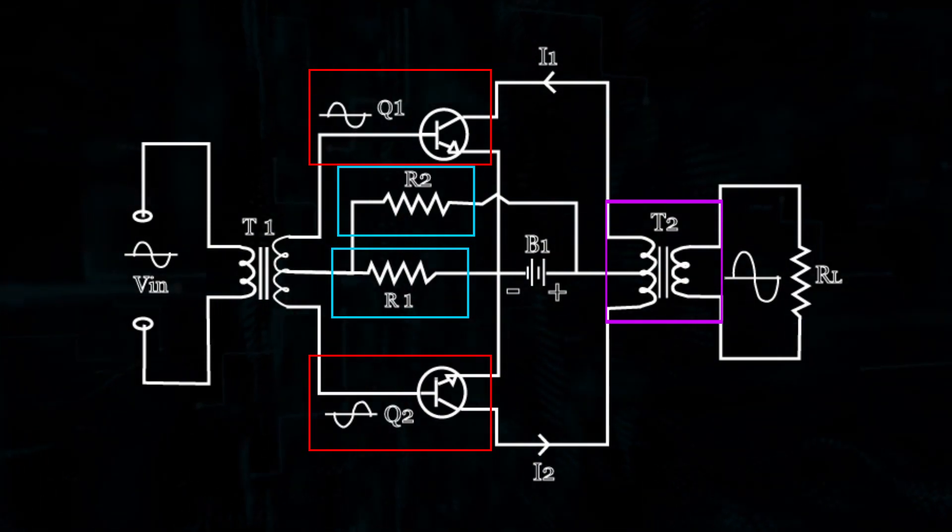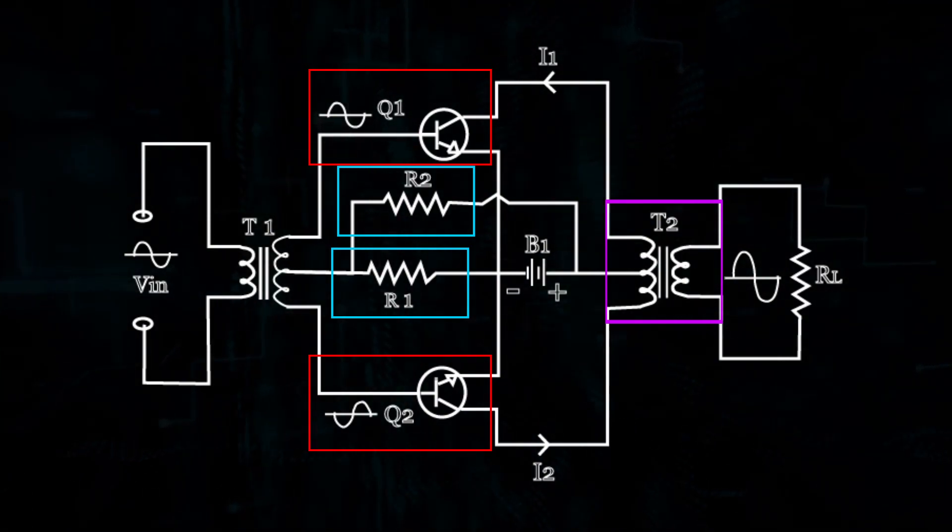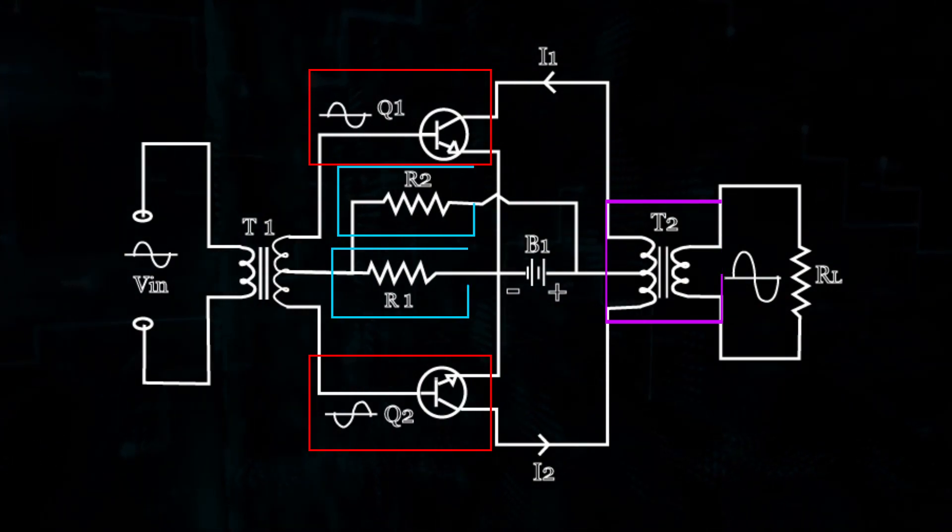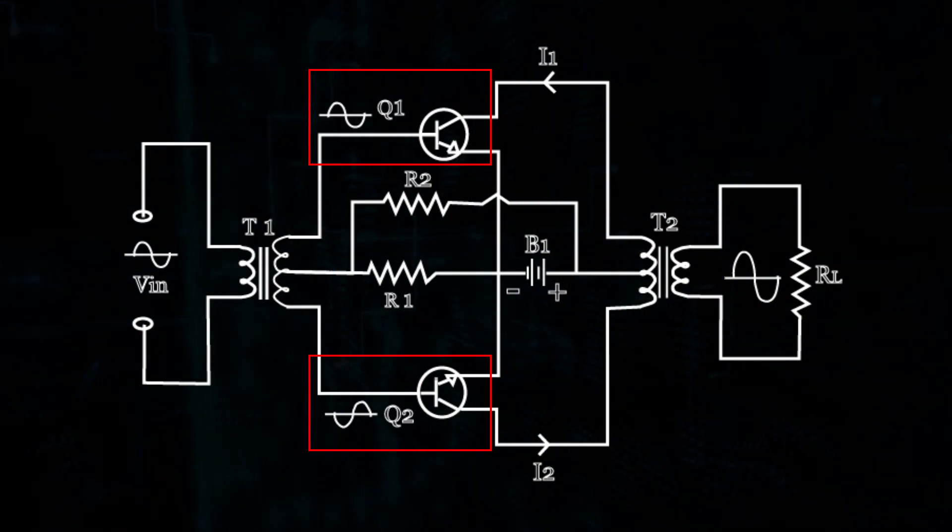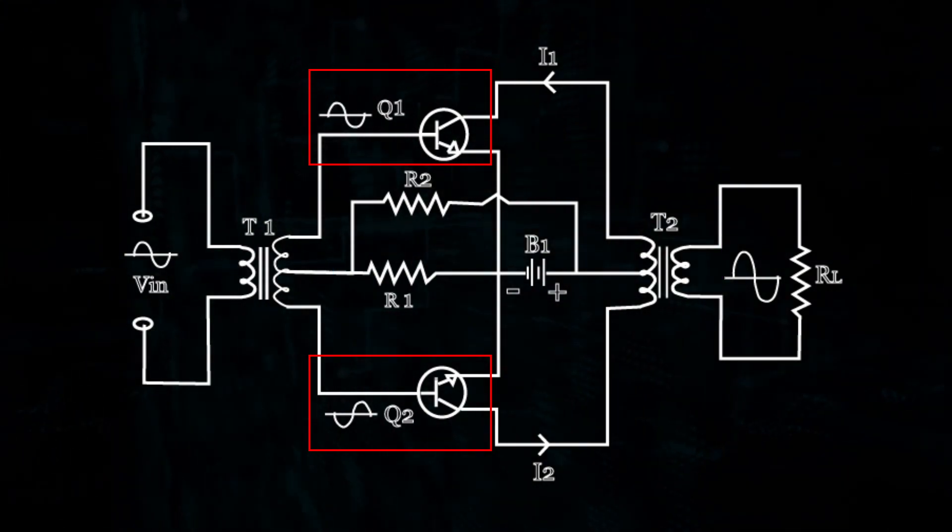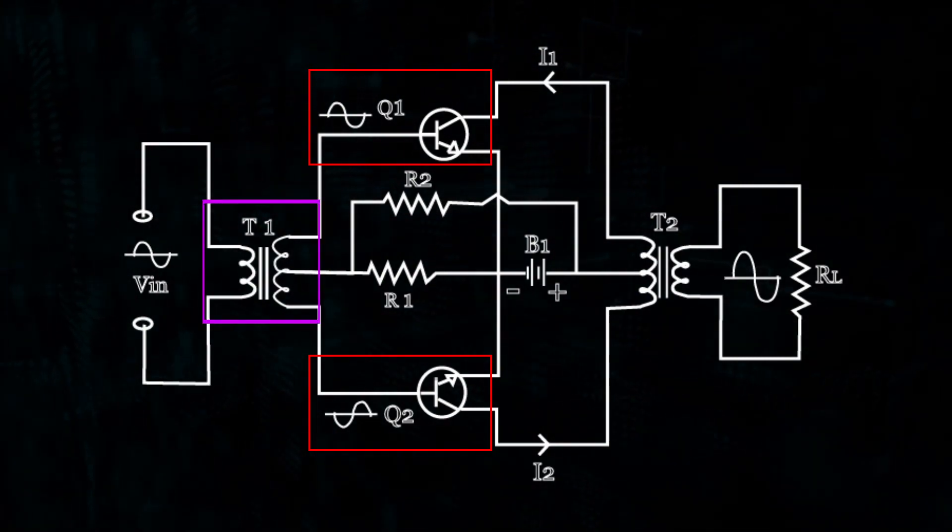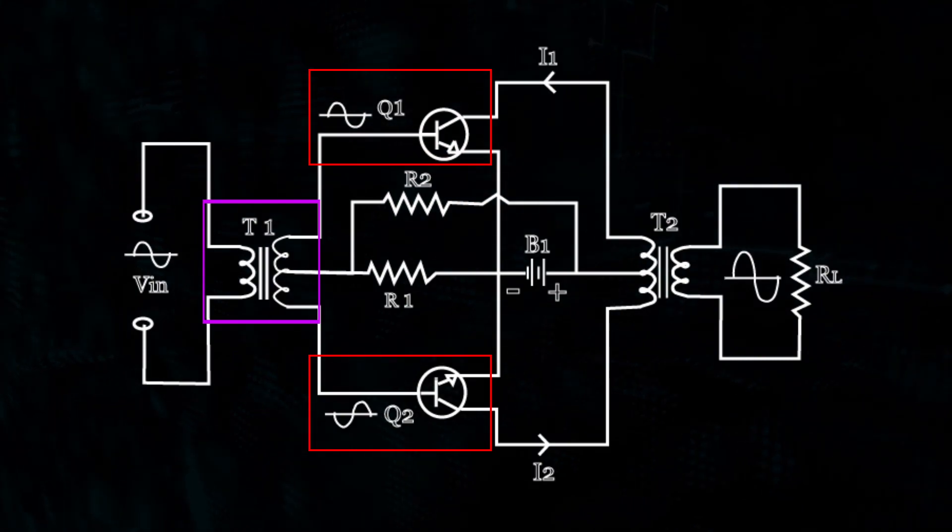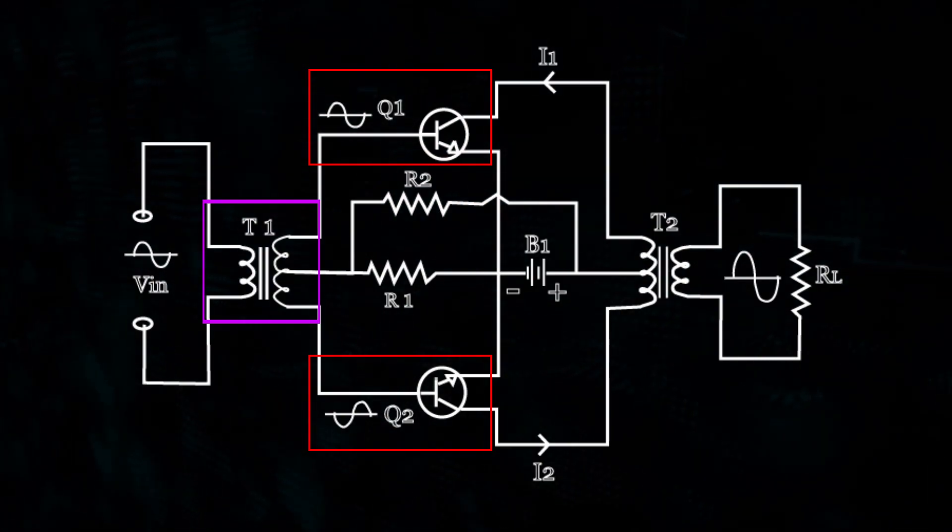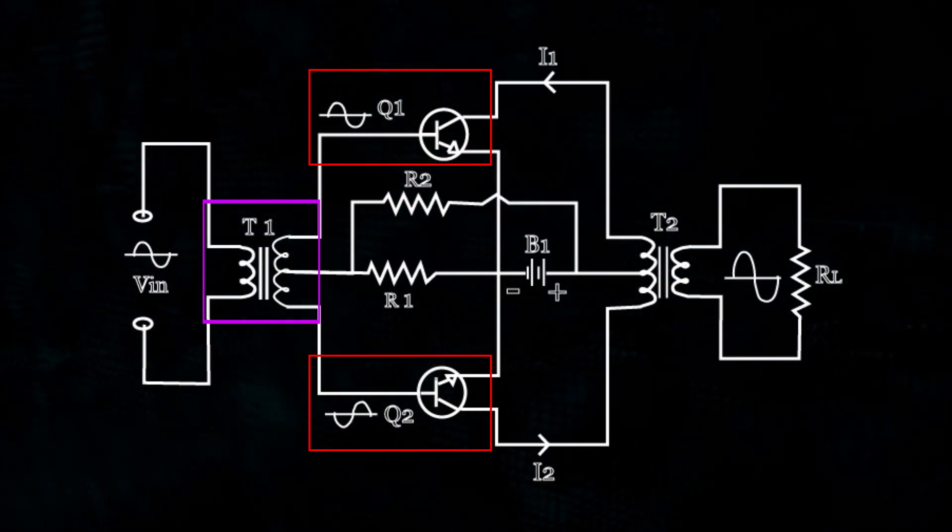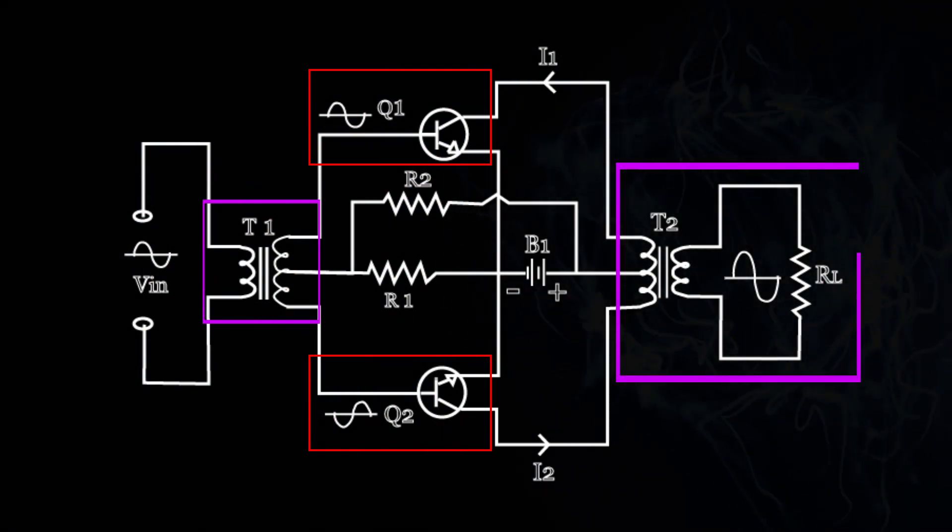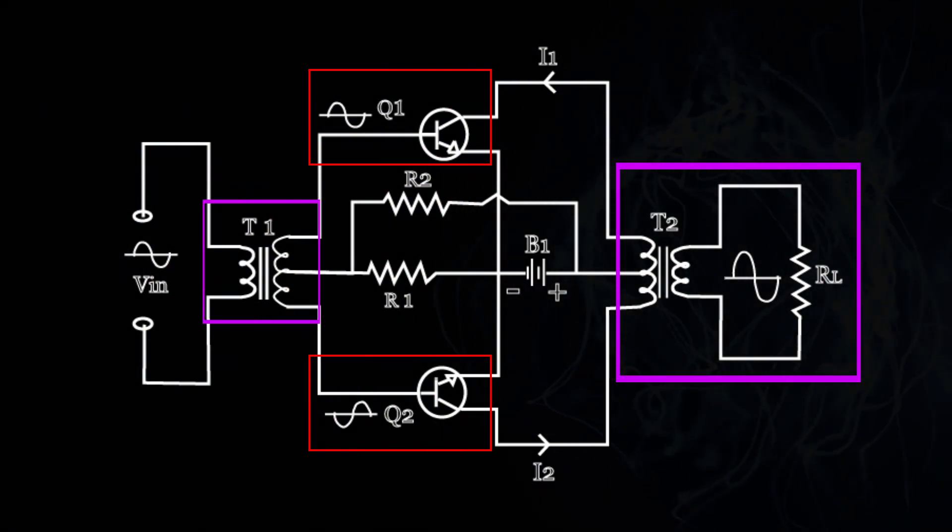Power supply is connected between the center tap of the T2 primary and the emitter junction of Q1 and Q2. Base terminal of each transistor is connected to the respective ends of the secondary of the input coupling transformer T1. Input signal is applied to the primary of T1 and output load is connected across the secondary of T2.